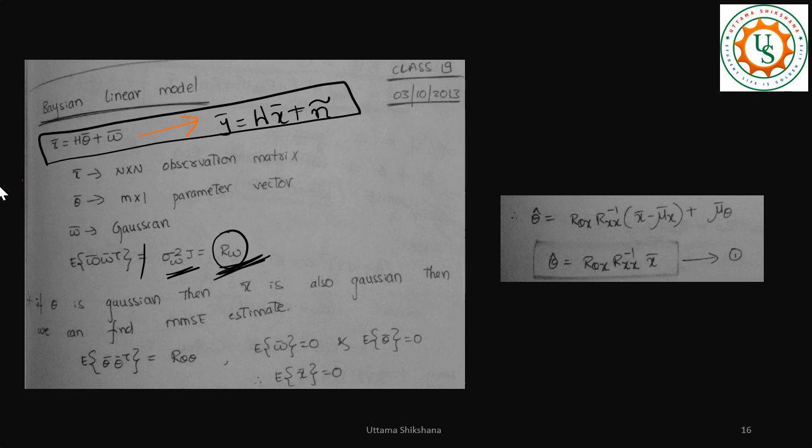Based on this, earlier we had seen that my x hat is given by this particular equation. Please try to replace the equations with the corresponding values. Here, x bar maps to y bar and your theta bar maps to x bar. W bar maps to your n tilde. So this is a generic expression, but we need to definitely substitute the values for these two things. Considering that, if I calculate those two things, I will get these two equations.